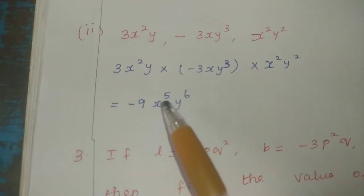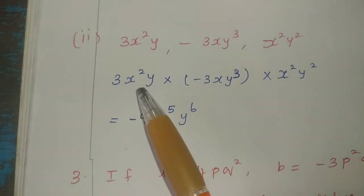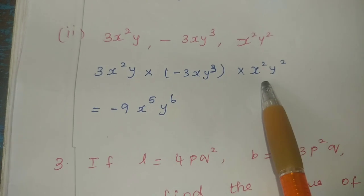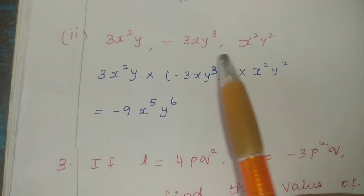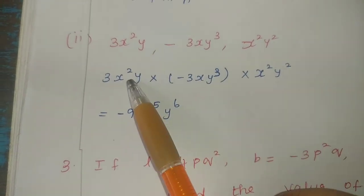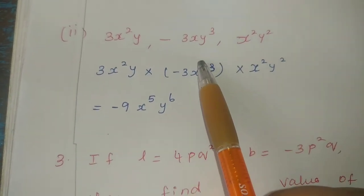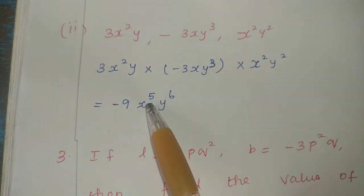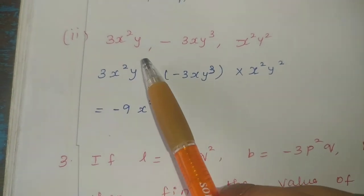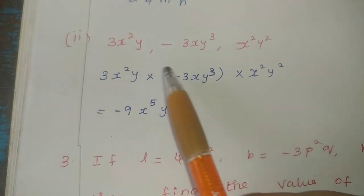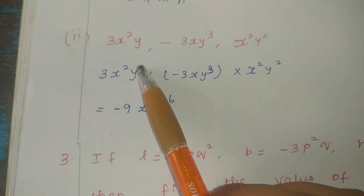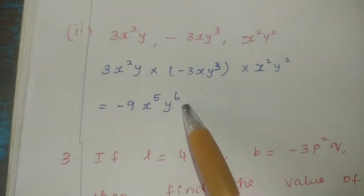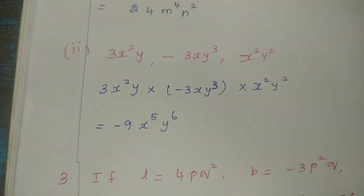Now add the powers of z. x square into x square — add the powers, 2 plus 2 is 4. No exponent shown means consider it as 1, so 4 plus 1 is 5, giving x to the power 5. For y: 3 plus 1 is 4, then 4 plus 2 is 6, giving y power 6.